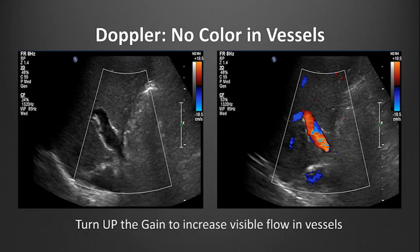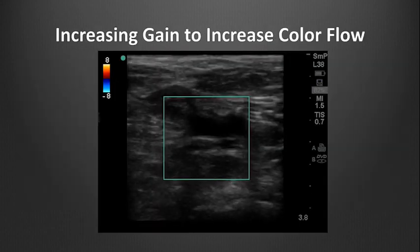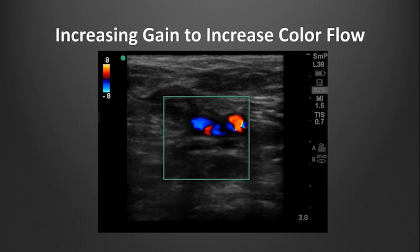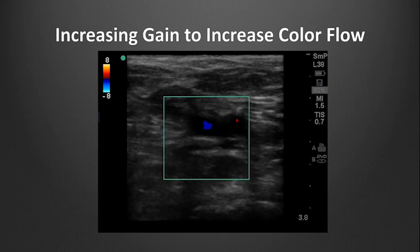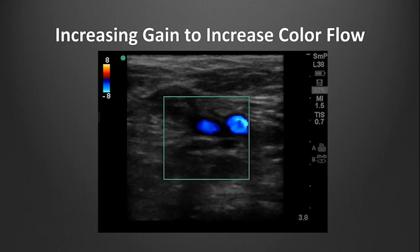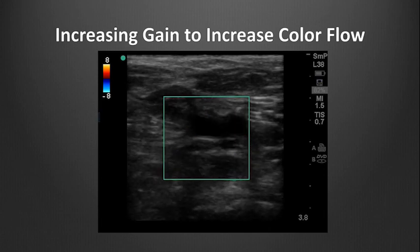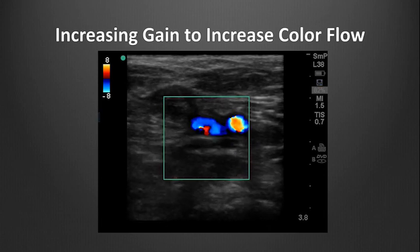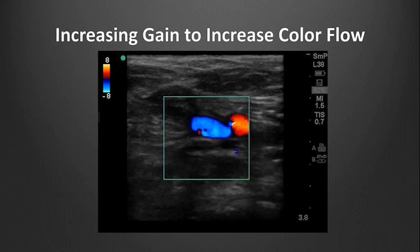Doppler signals are generated by the reflection of ultrasound beams off of the moving red blood cells. However, if a B-mode gain setting is too low or a wall filter setting is too high, you may not see the signal. Try increasing the gain slowly to increase the appearance of color flow within the vessel. Remember, the color in the vessel only reflects which direction the blood is flowing relative to the probe surface and the ultrasound beam — it does not denote which vessel is an artery or a vein; that is a clinical impression. Flow towards the probe appears red, and flow away from the probe appears blue.